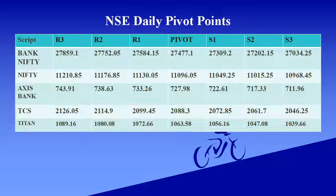Now we go to NSE daily pivot points. Bank Nifty pivot level is 27,477. Support level ranges: 27,309 and 27,034. Resistance level ranges: 27,584 and 27,850.